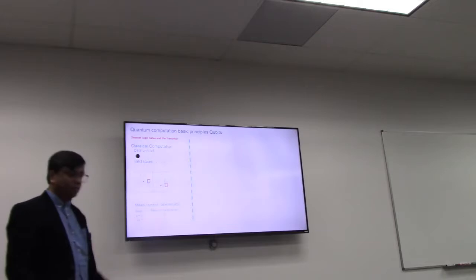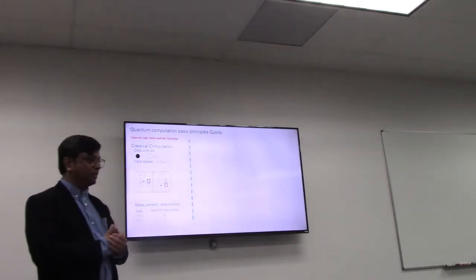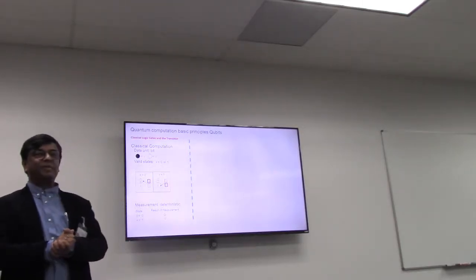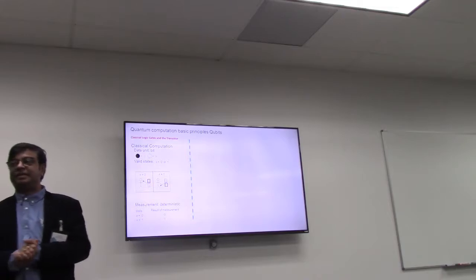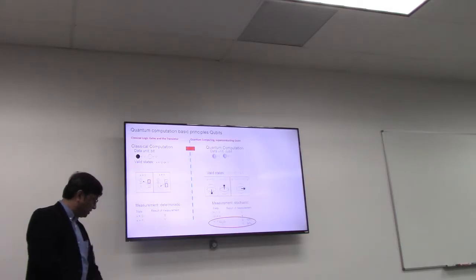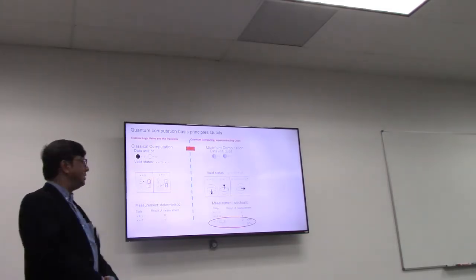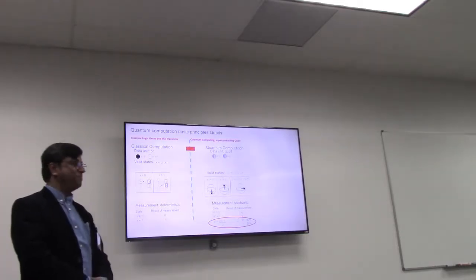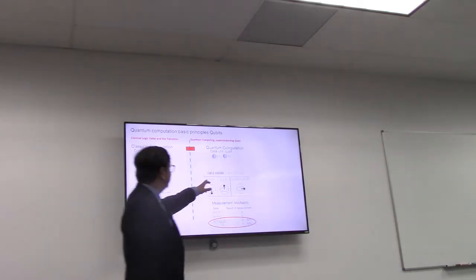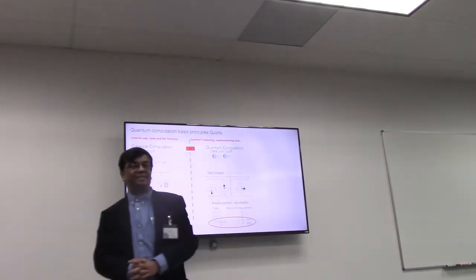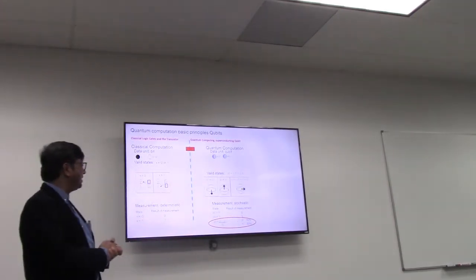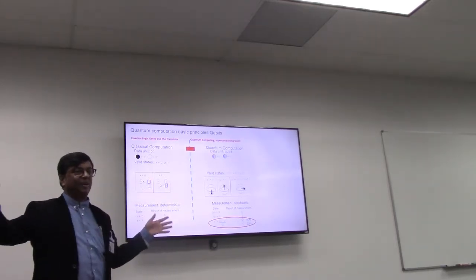Just to explain what is quantum system very simply, in classical system you have bits 0 and 1 always, so you have either 0 or 1. But in quantum system you can have both 0 and 1 at the same time. This is called a superposition of state. You can see here that state is written as a combination of 0 and 1. So you can create a very large string of data.